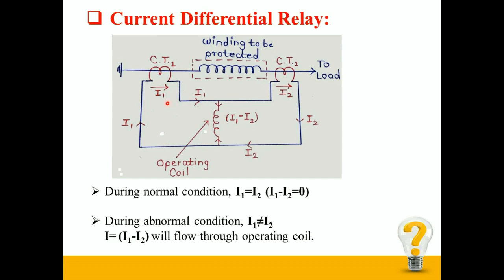During normal condition I1 is equal to I2. If you apply KCL to both the loops, you can see that the current flowing through the operating coil is I1 minus I2. During normal condition I1 is equal to I2, therefore I1 minus I2 is equal to 0. Therefore no current flows through the operating coil, so relay is not energized.